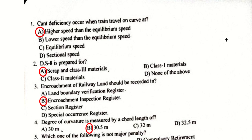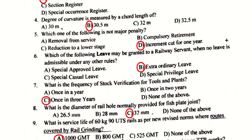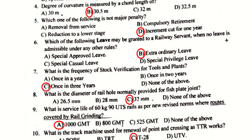Encroachment of railway land should be recorded in the Encroachment Inspection Register. Degree of curvature is measured by a chord length of 30.5 meters — that is option B.